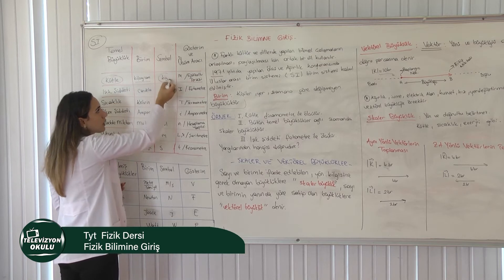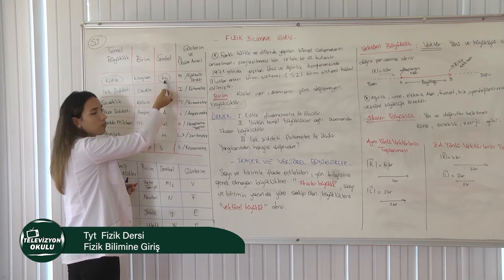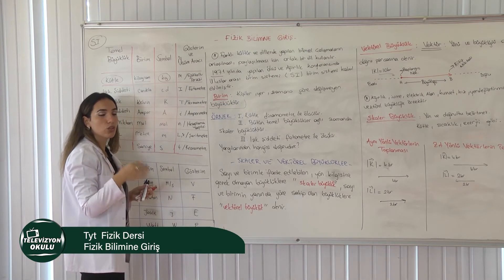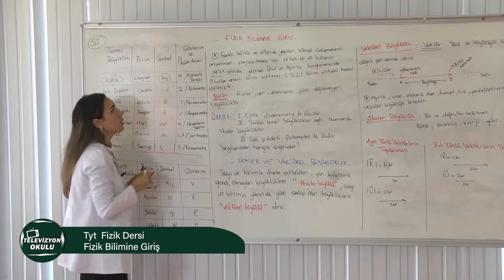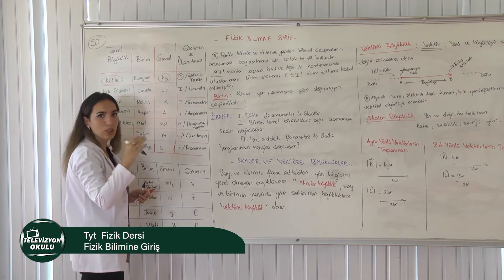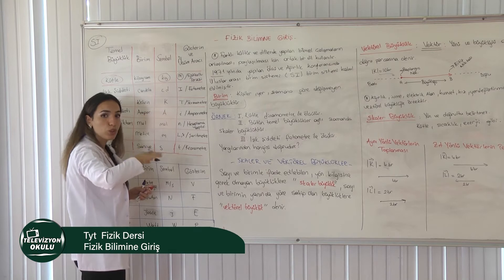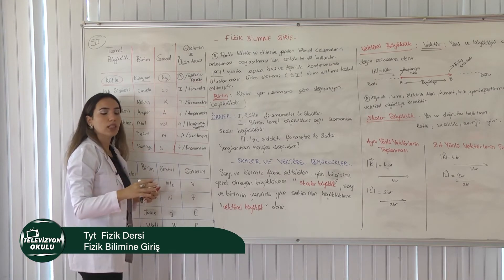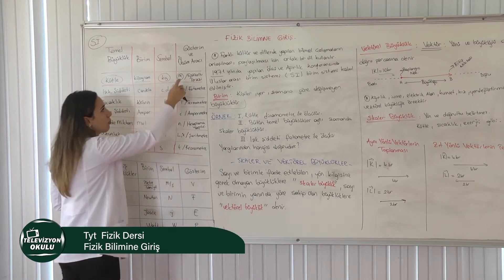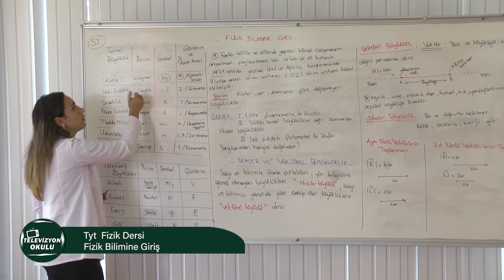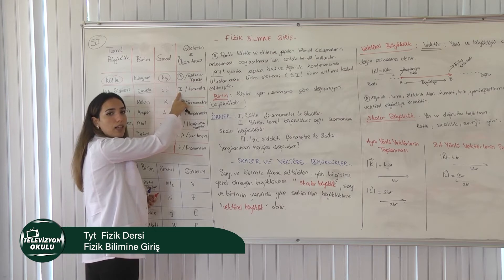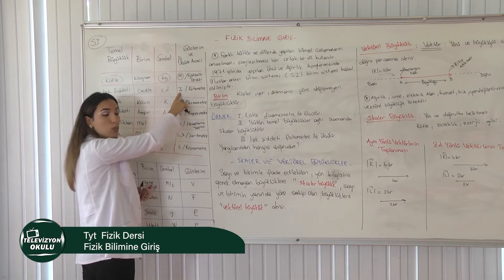Kütlenin birimi kilogram, küçük k ve g harfiyle kısaltarak yazabiliyoruz. Sorularda kütleyi küçük m harfi ile tanıyoruz; '5m kütleli' diye söyleyebilirler. Fizikte birçok harfin birçok anlamı olabilir, dolayısıyla bu ünitede kütle küçük m harfi ile kitaplarda tanıyabilirsiniz.